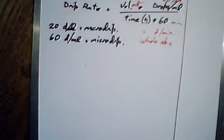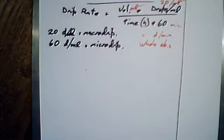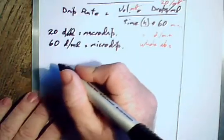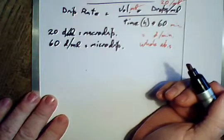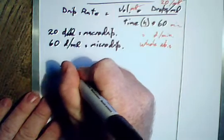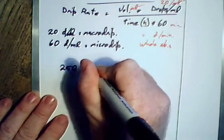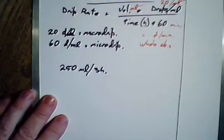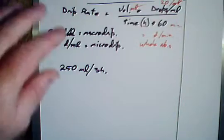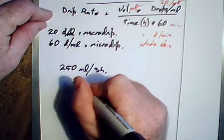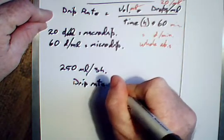So let's work an example with this. Let's say that we've got a medication where it's going to require 250 milliliters to be delivered over three hours. That's pretty straightforward, that's pretty normal.